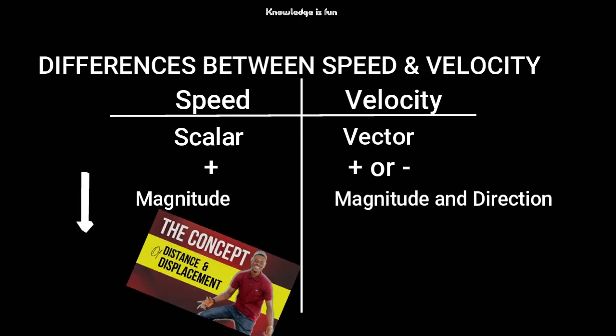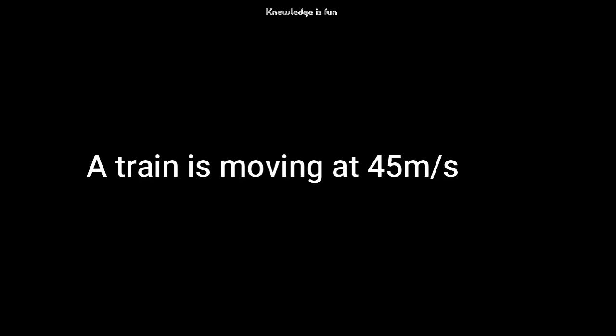Now let's take another example to explain the differences between speed and velocity. A train is moving at 45 meters per second. In this case I am telling you how far the train is moving, not where it is going. This describes speed, because 45 meters per second explains only the magnitude.